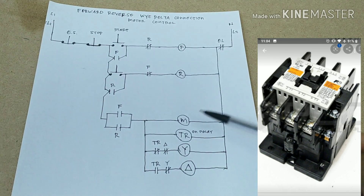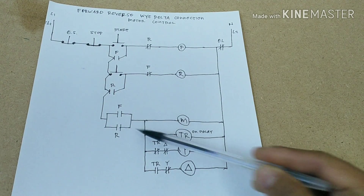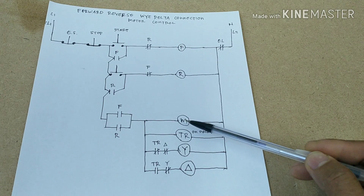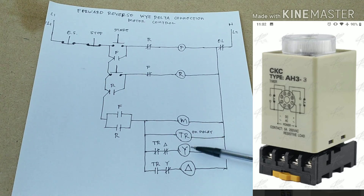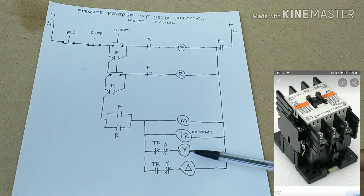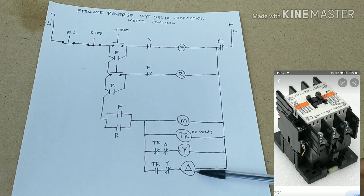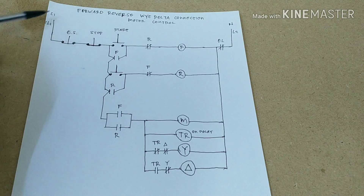This is our main contactor. This is the control for delta. This is our main contactor. This is our timer. This is our Y contactor, and this is our delta contactor.